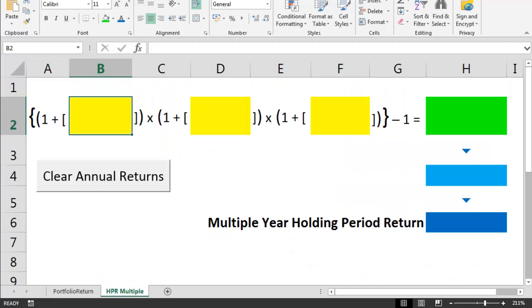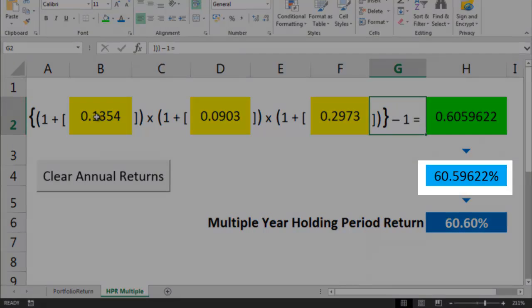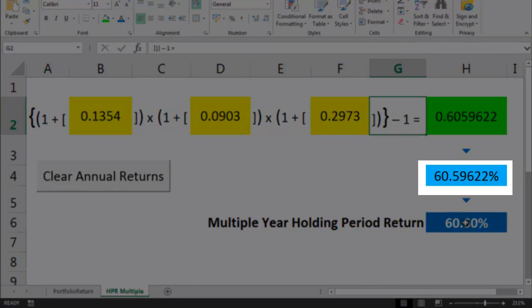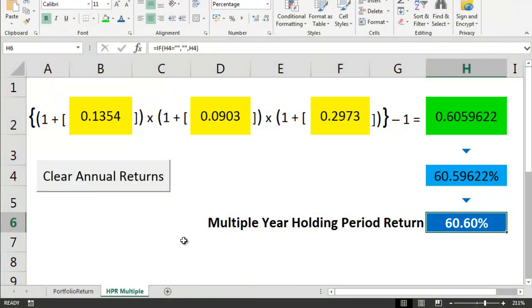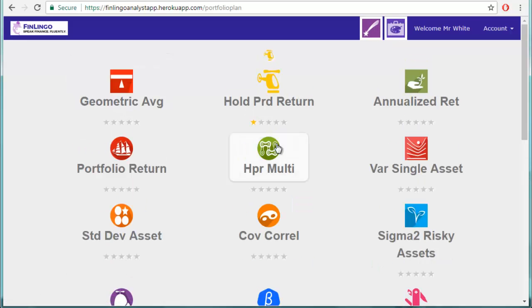Here's a quick spreadsheet I've put together to work out the calculation. Let's enter those three annual return figures: 0.1354, then 0.0903, then 0.2973. And then the equation gives us 60.59622, or approximately 60.60%. So let's do an example on finlingo.com.